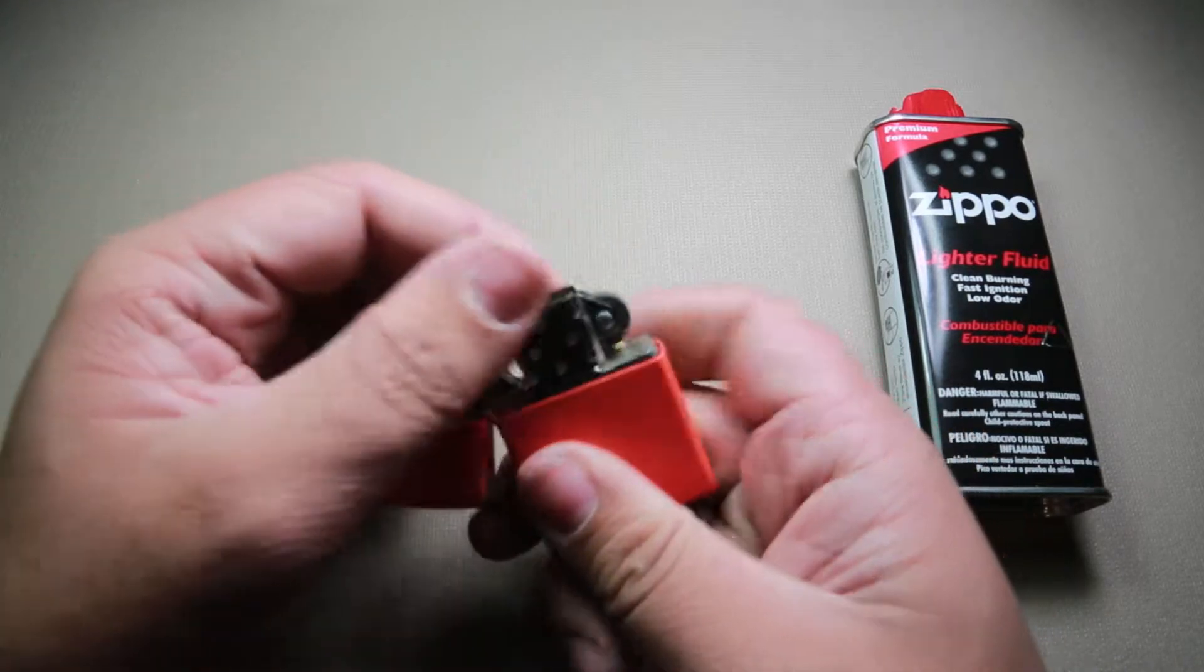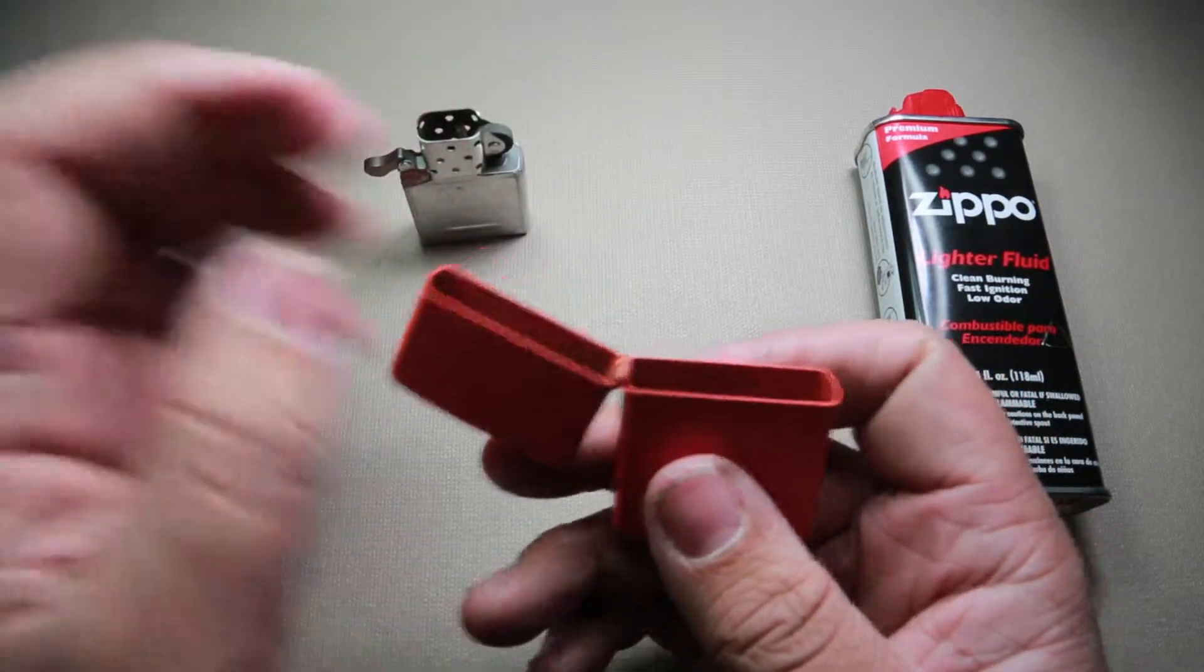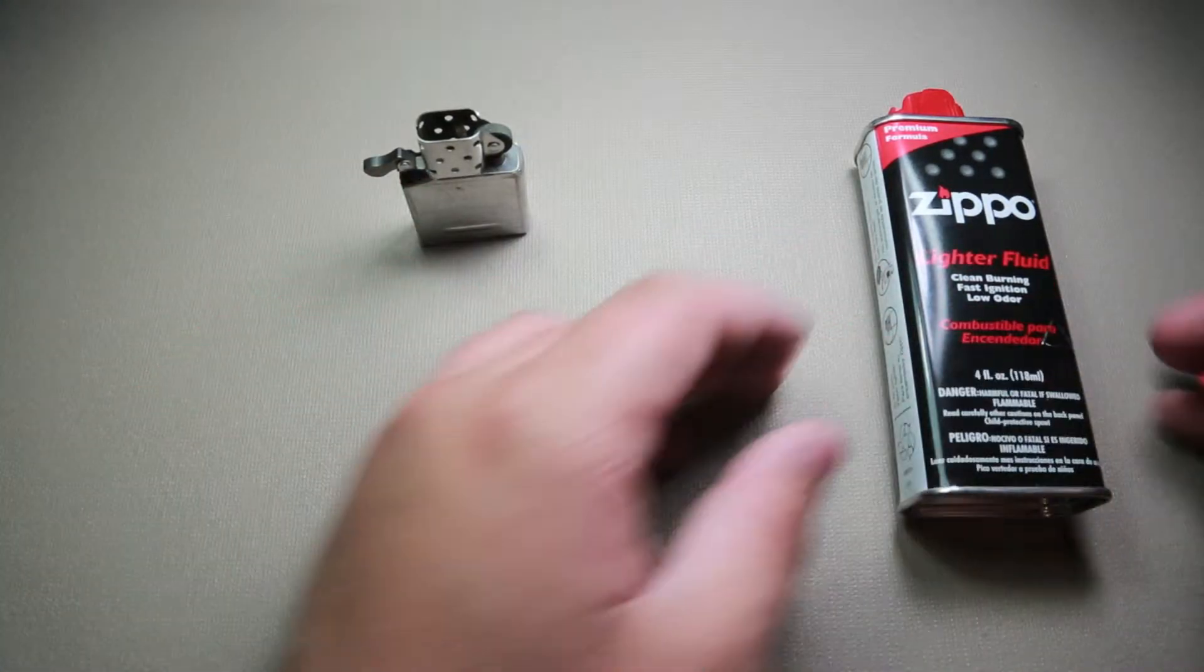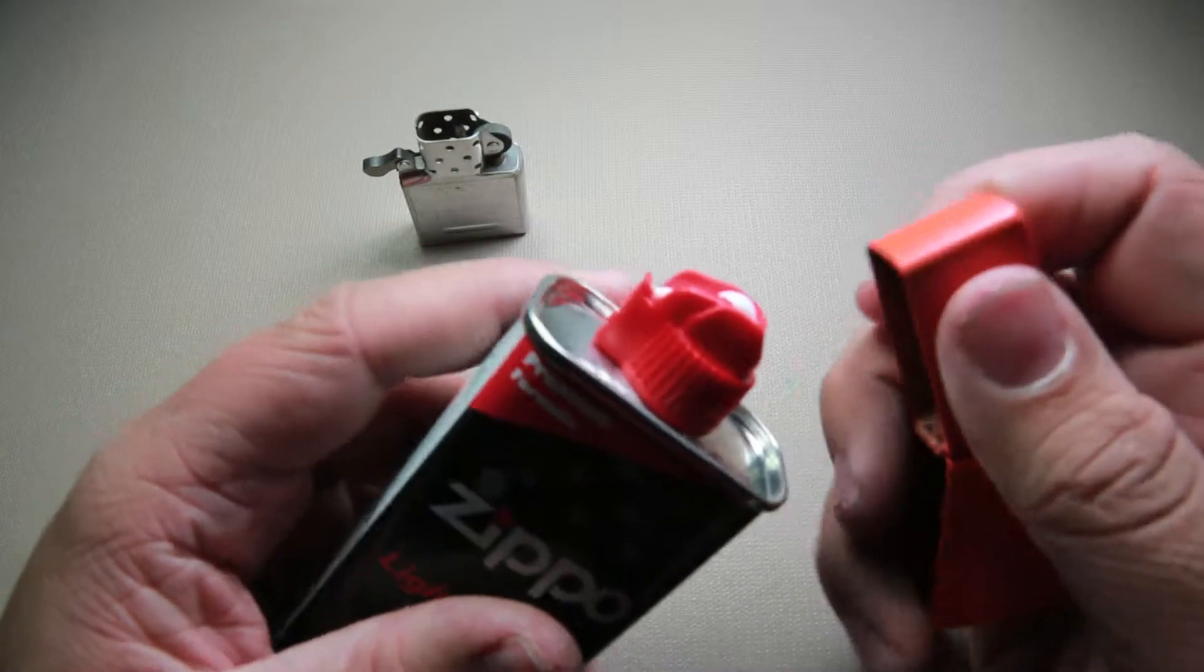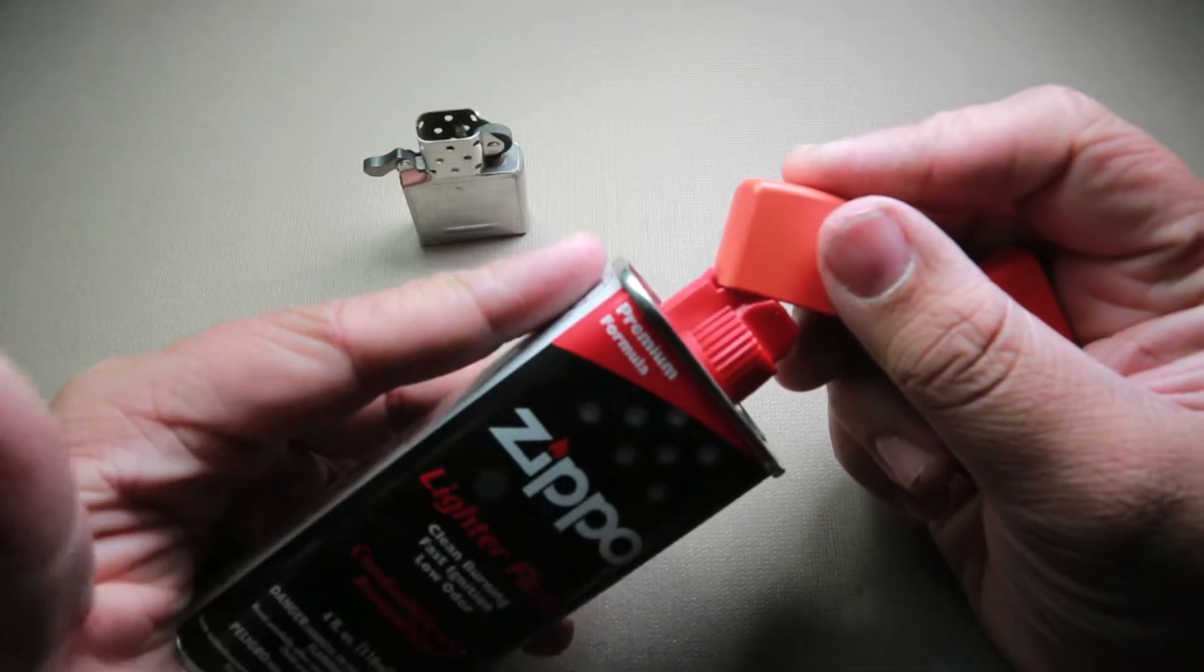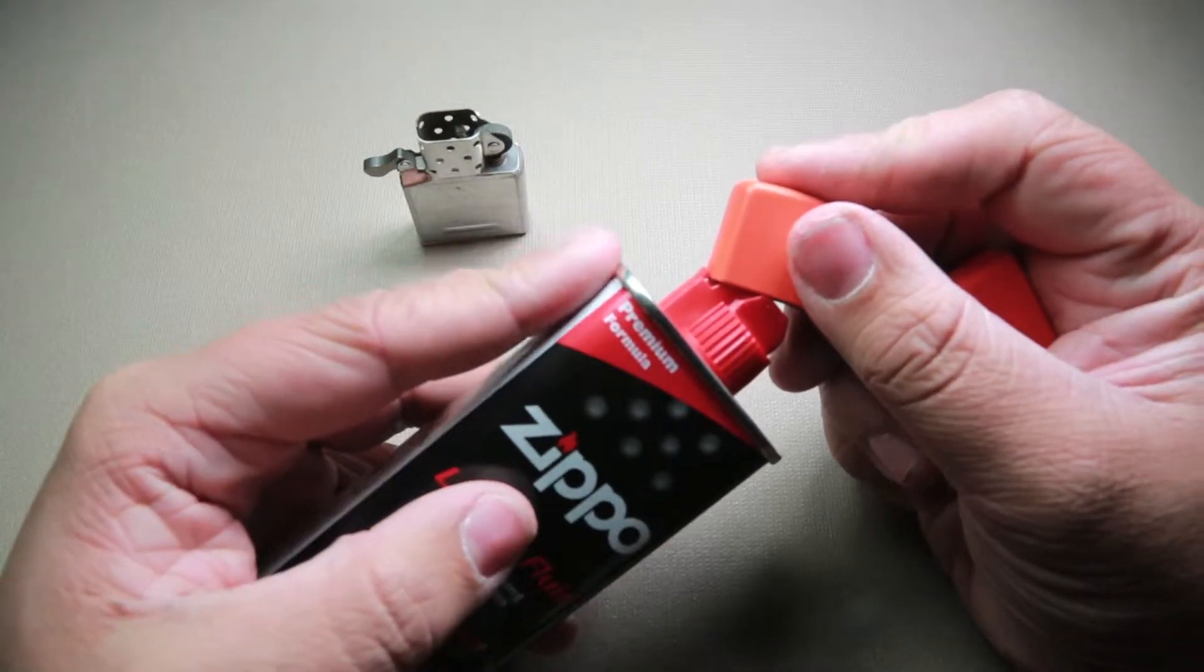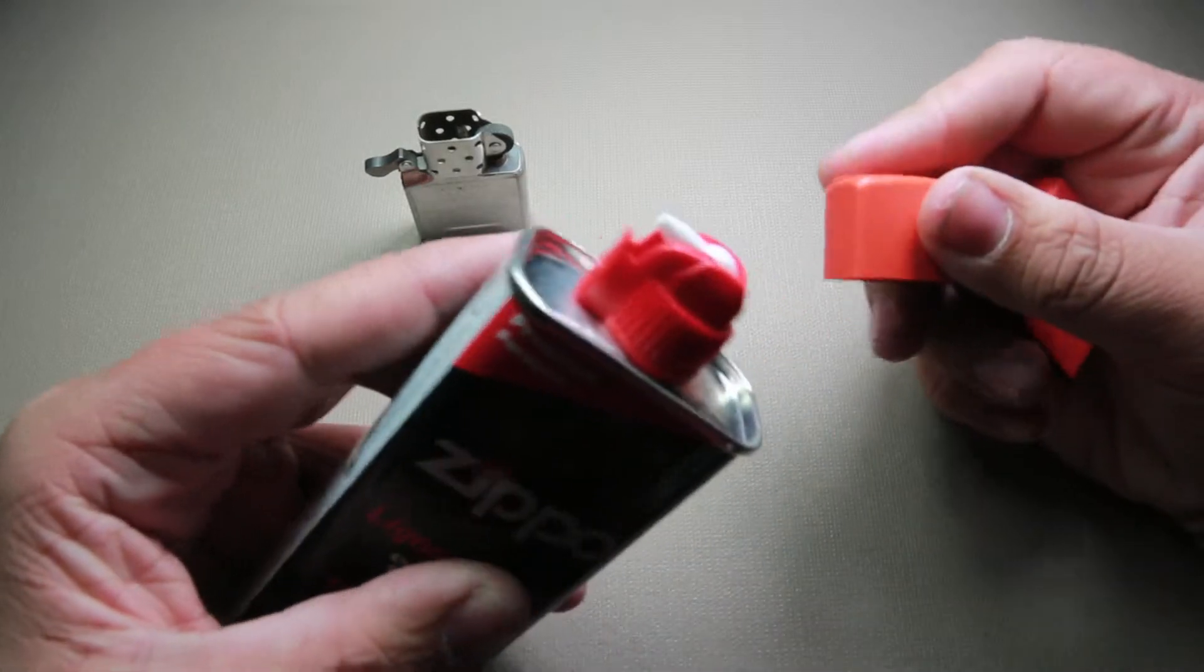First thing you want to do is take your Zippo insert out of your Zippo casing, obviously, because that's the only way you can fill it up. Then you take your case and put it right here on the Zippo fluid can, push, and pull up the little nozzle.